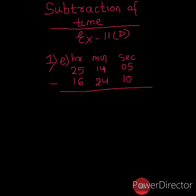Hello students, let's get started with the subtraction of time. Last class we already started with addition, now let's move on to subtraction. Today we will be doing Exercise 11D directly. Let's get started with question number 1e: 25 hours 10 minutes and 5 seconds minus 16 hours 24 minutes and 10 seconds.